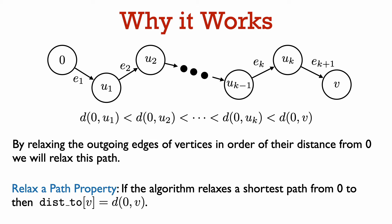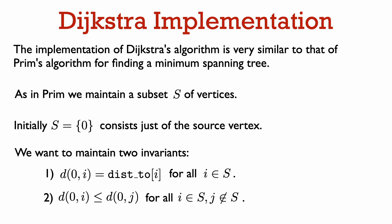Now let's see how we can actually iterate over the vertices in order of their distance from vertex 0. The implementation of Dijkstra's algorithm is very similar to Prim's algorithm for finding a minimum spanning tree. We are going to maintain a subset S of vertices. Initially, S starts out being just the source vertex 0. We're going to use a minimum priority queue to determine which vertex to add to S next. The key values used for the priority queue elements will be different in Dijkstra's algorithm than in Prim's algorithm.